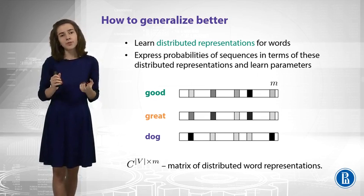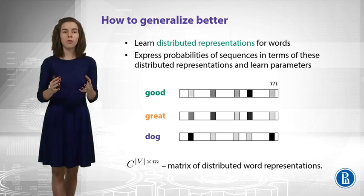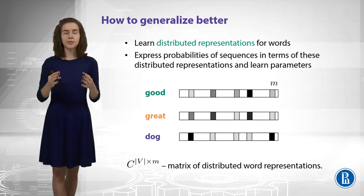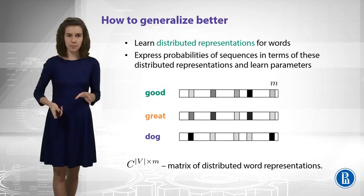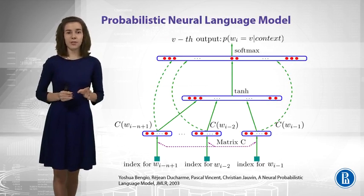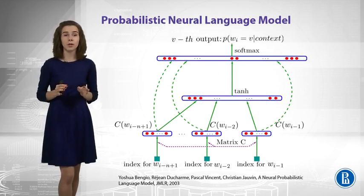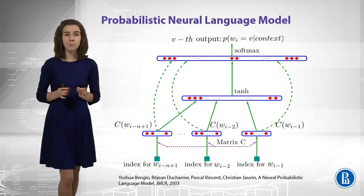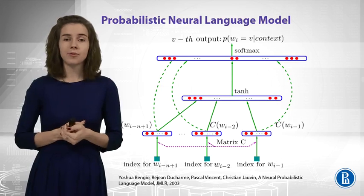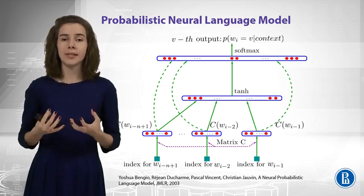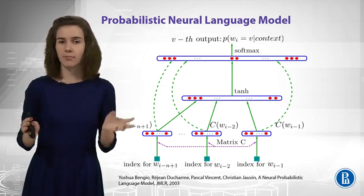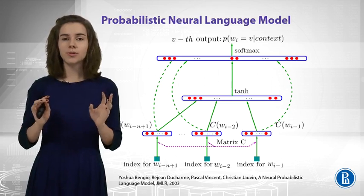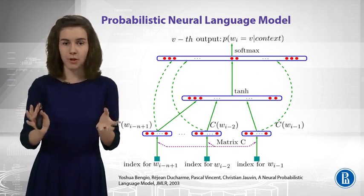Okay, so we are going to define probabilistic model of data using these distributed representations. And we are going to learn lots of parameters, including these distributed representations. This is the model that tries to do this. Actually, this is a very famous model from 2003 by Bengio, and this model is one of the first neural probabilistic language models. So, this slide may be not very understandable for you, that's okay. I just want you to get the idea of the big picture.